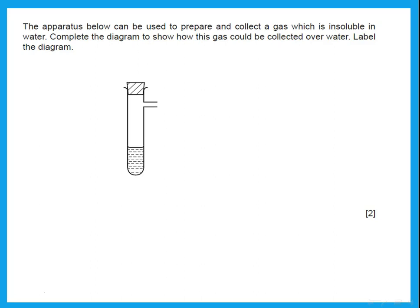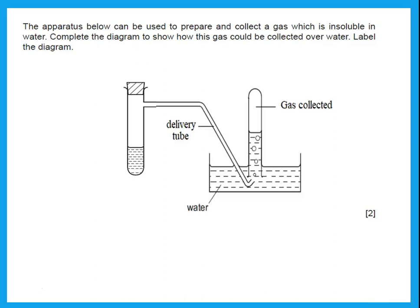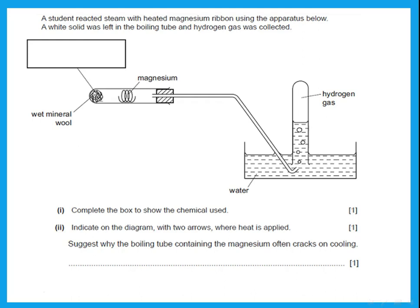The apparatus can be used to prepare and collect a gas that is insoluble in water. To collect a gas insoluble in water, you collect it over water. Complete the diagram to show how the gas is collected over water — and label it. You need a delivery tube going into a trough or beaker containing water, with an inverted container filled to the top with water. As the gas bubbles through, it collects over the water.